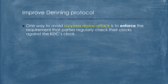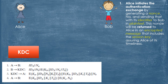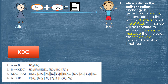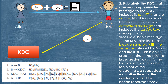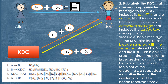Step 1: Alice initiates the authentication exchange by generating a nonce and sending it with her identifier to Bob in plain text. This nonce will be returned to Alice in an encrypted message that includes the session key, assuring Alice of its timeliness. Step 2: Bob alerts the KDC that a session key is needed. Bob's message to the KDC includes its identifier and a nonce, which will be returned to Bob in an encrypted message including the session key, assuring Bob of its timeliness.